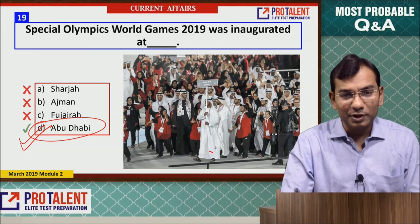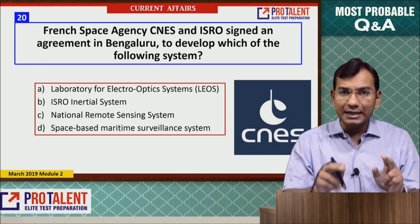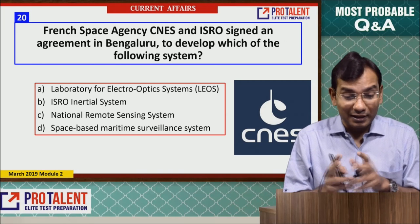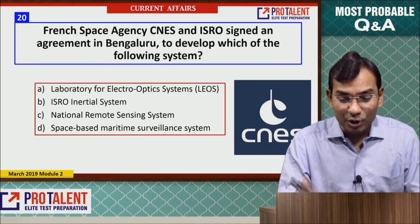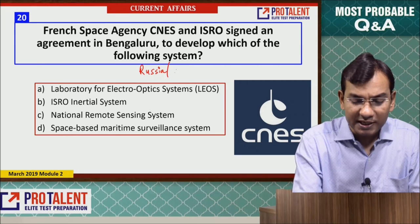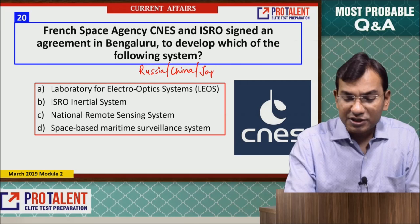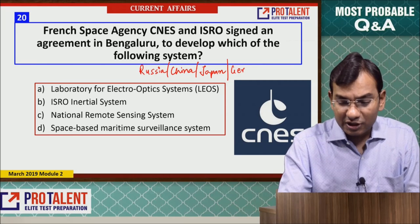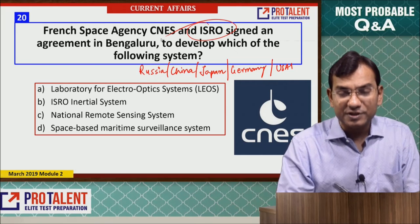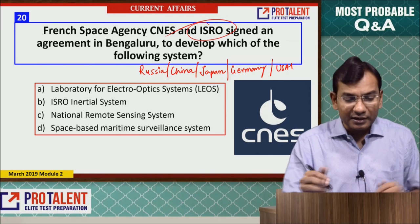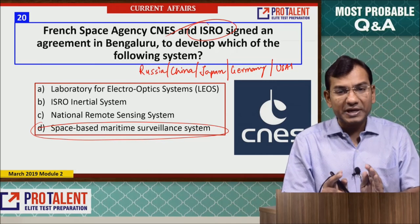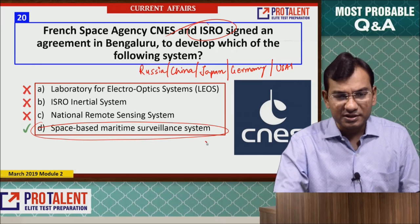Question 20: France's Space Agency CNES and ISRO have signed an agreement at Bangalore. You should also know the space agencies of Russia, China, Japan, Germany, and the USA. The France-India agreement is related to a Space-Based Maritime Surveillance System.